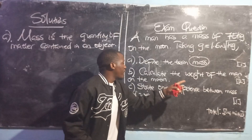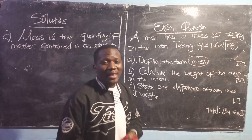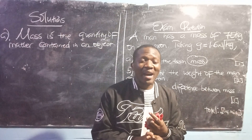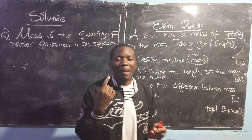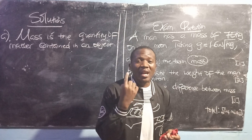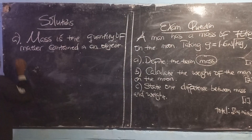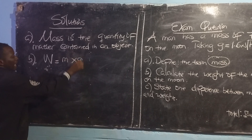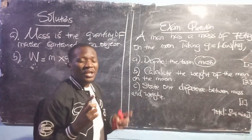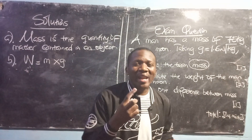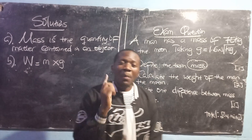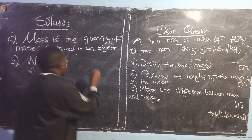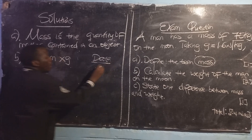Calculate the weight of the man on the moon. The first important thing, which is highly recommendable, is coming up with the correct formula. Thereafter, we are going to come up with our correct data to substitute into the formula. We are going to say: weight equals mass multiplied by gravity. Whenever you face a question involving a formula or any calculation, make it your priority to collect your data on the right-hand side.